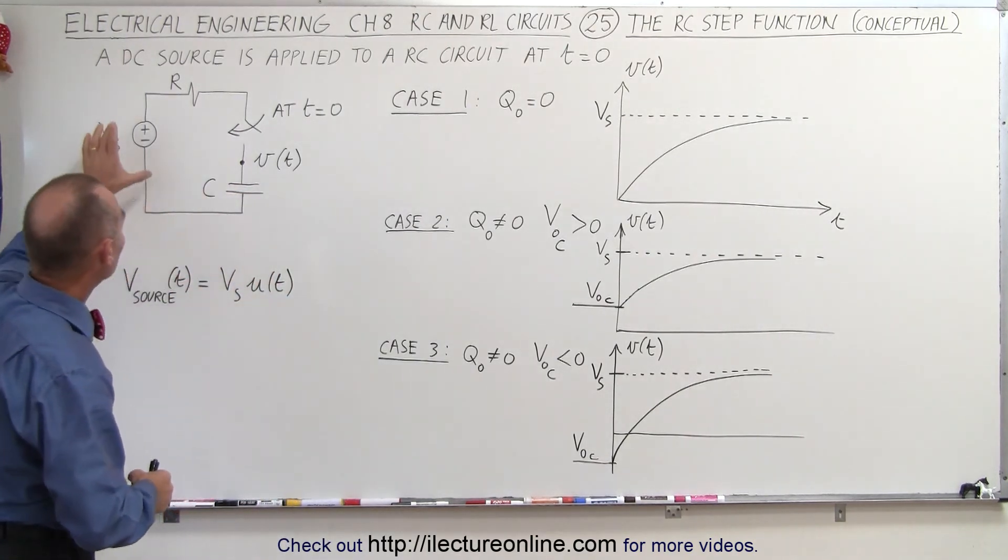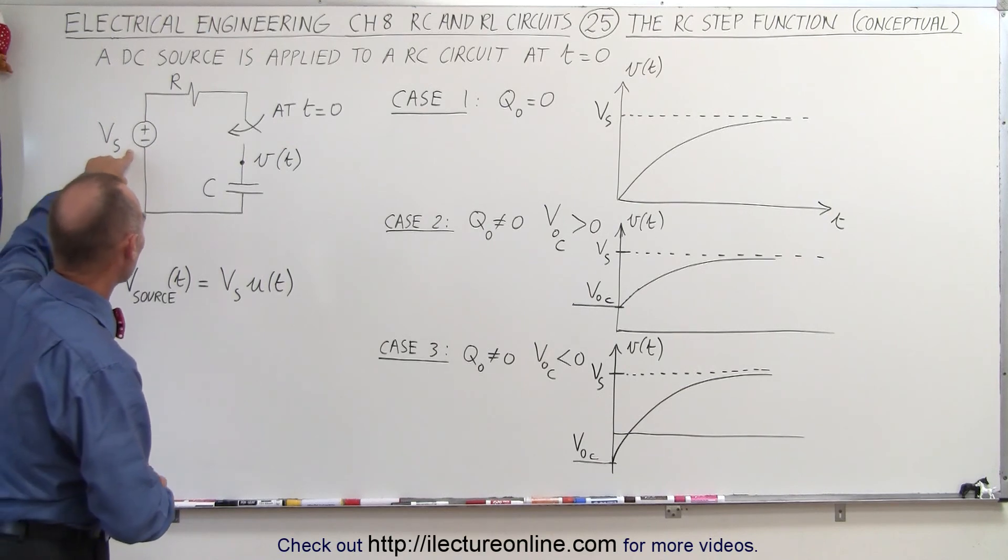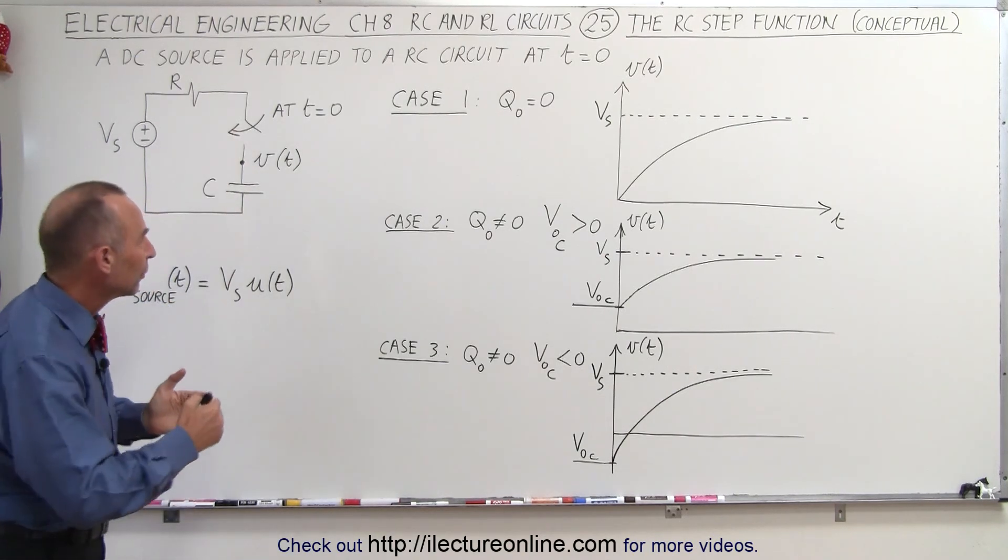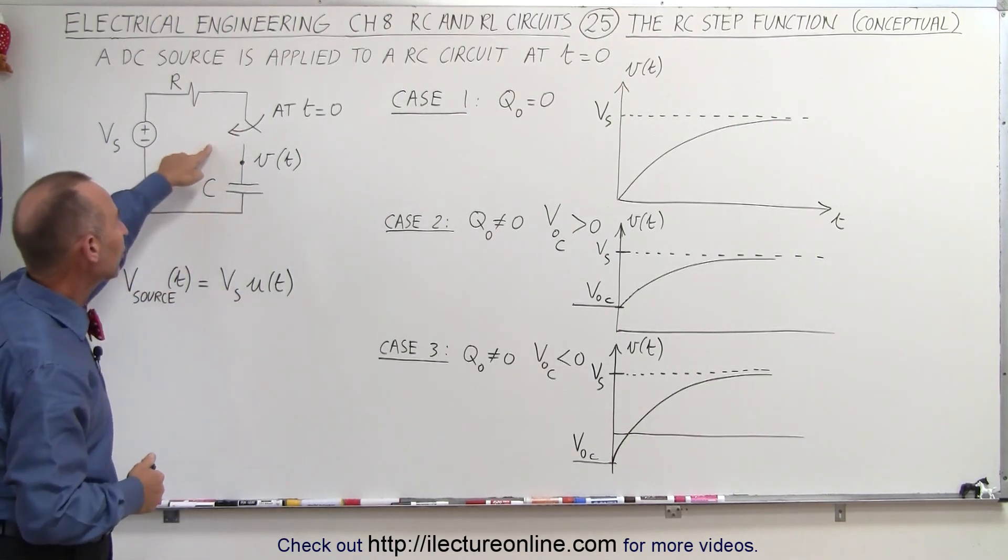What we have here is a circuit that contains a voltage source, a DC voltage source, attached to a resistor and a capacitor, but there's also a switch that is open, which will be closed at t equals zero.